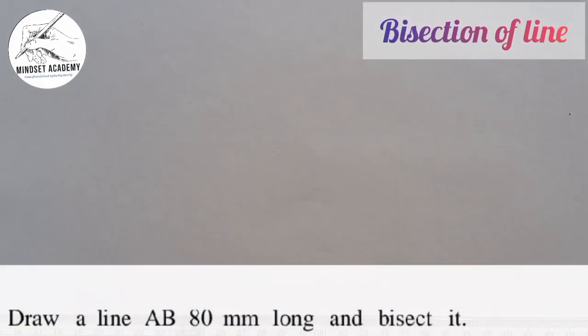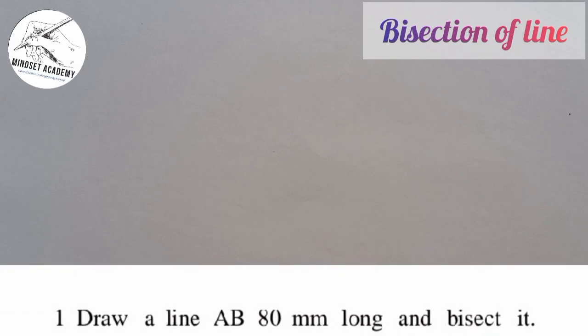In this video we are learning how to bisect a line in geometric construction. The question says draw a line AB 80 millimeter long and bisect it.